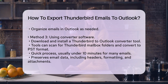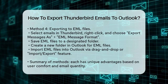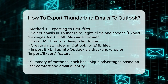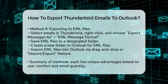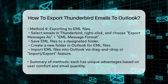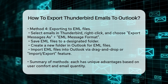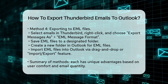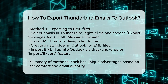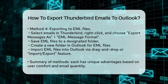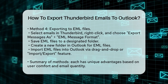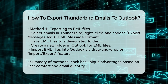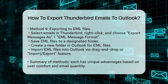Exporting to EML files. You can also export your Thunderbird emails to EML files and then import them into Outlook. In Thunderbird, select the emails you want to export, right-click, and choose Export Messages as EML Message Format. Save these EML files to a folder on your computer. In Outlook, create a new folder and either drag and drop the EML files into it or use the Import-Export feature to import these files.